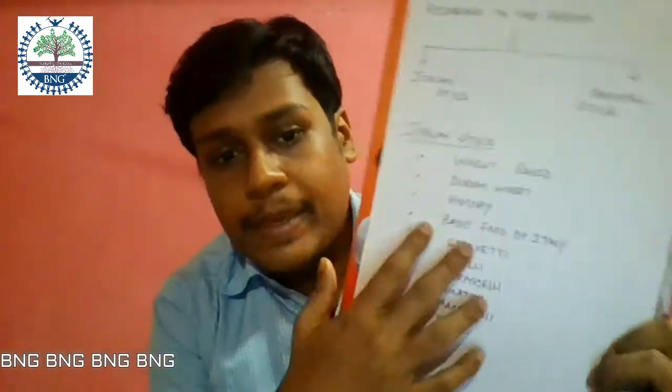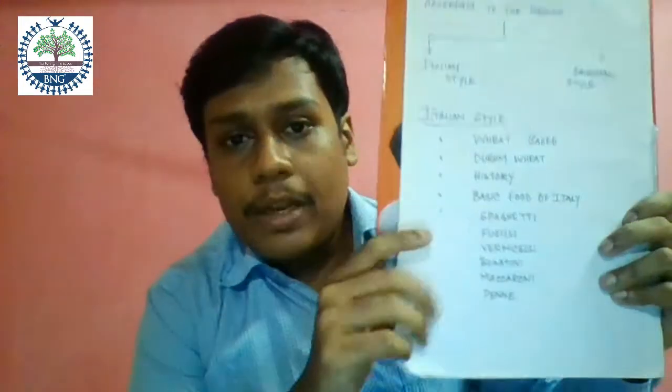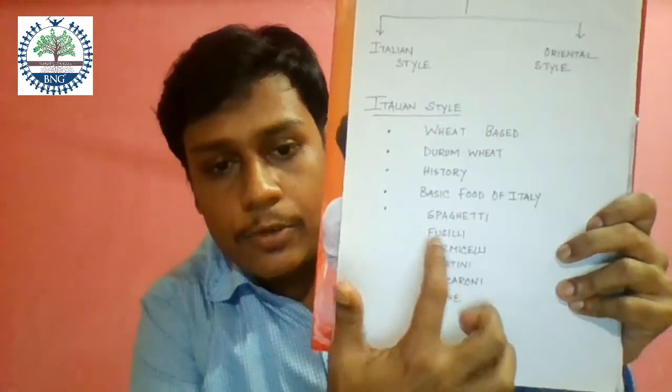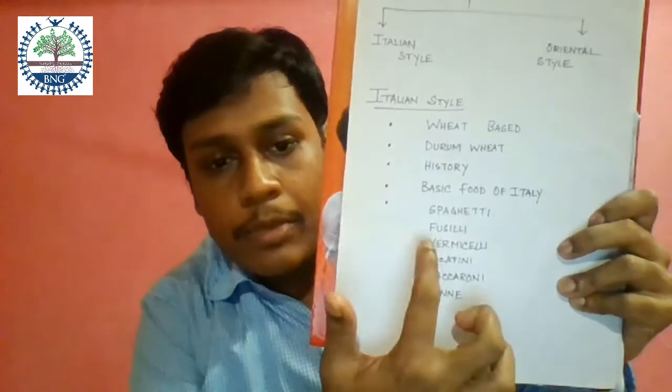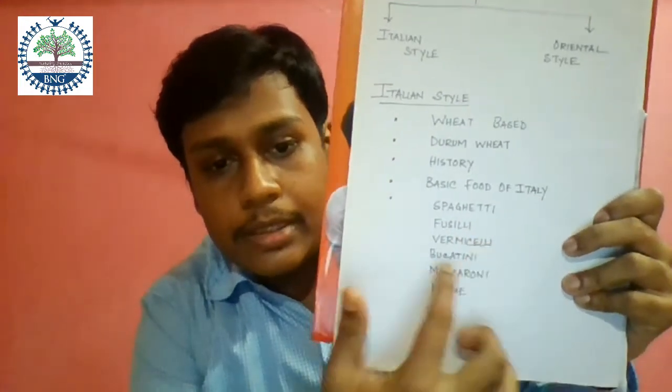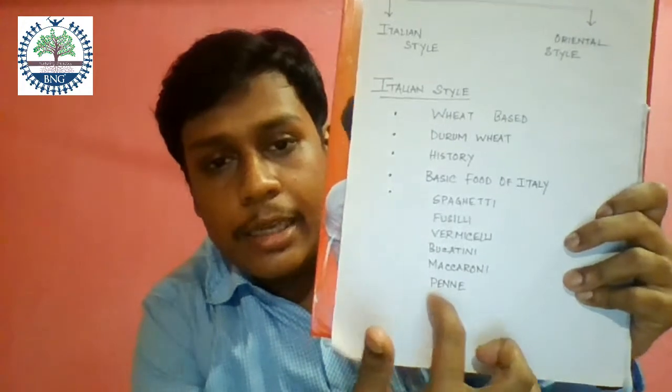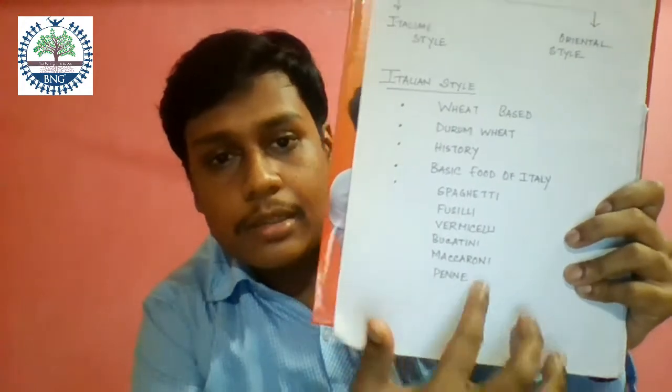Next, basic food. Pasta is the basic food of Italy. Examples of Italian pasta are spaghetti, fusilli, vermicelli, bucatini, macaroni, and penne pasta. This is Italian style pasta.